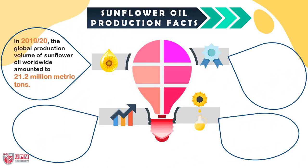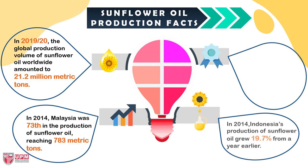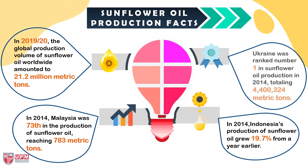In 2019–2020, the global production volume of sunflower oil worldwide amounted to 21.2 million metric tons. In 2014, Malaysia ranked 73rd in the production of sunflower oil reaching 783 metric tons. Indonesia's production grew 19.7 percent from a year earlier. Ukraine ranked number one in sunflower oil production in 2014, totaling 4,400,324 metric tons.